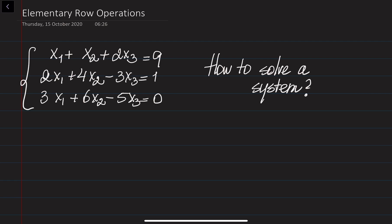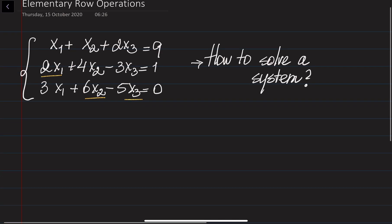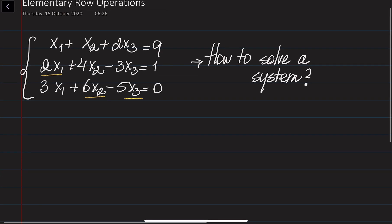If you're given a system of linear equations, how would you solve it? If you remember from school, if I would like to solve a system of equations, I would try to eliminate some of the variables — x1, x2, or x3 — from the first, second, or third equations. In order to do this, I could do three different operations.